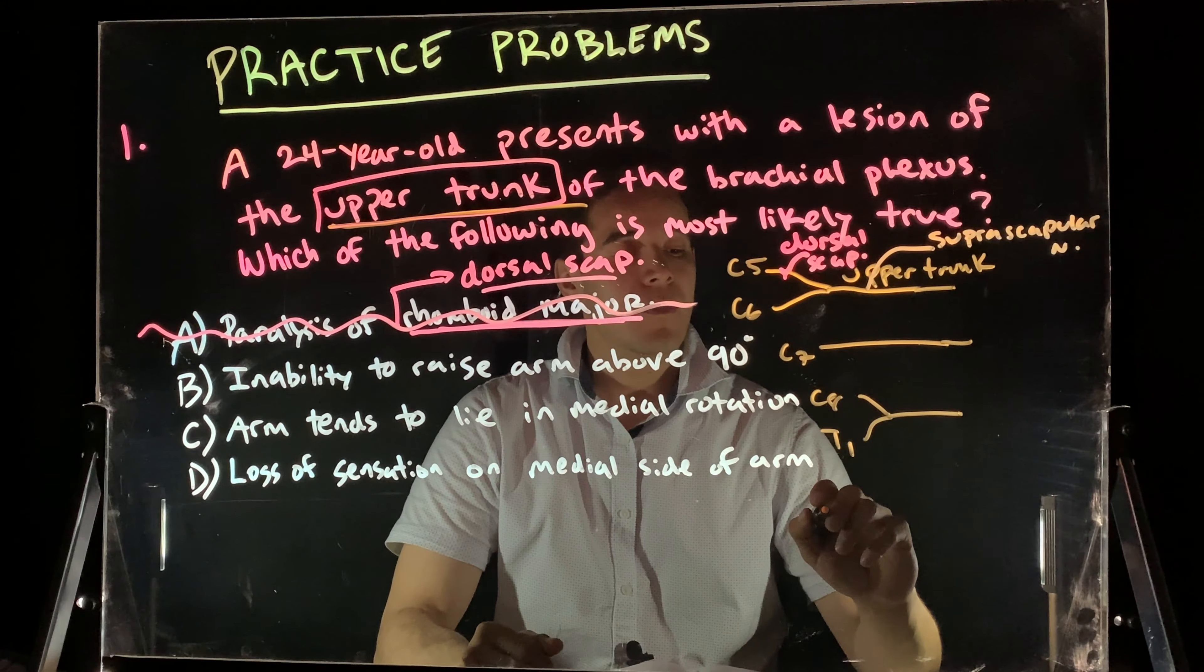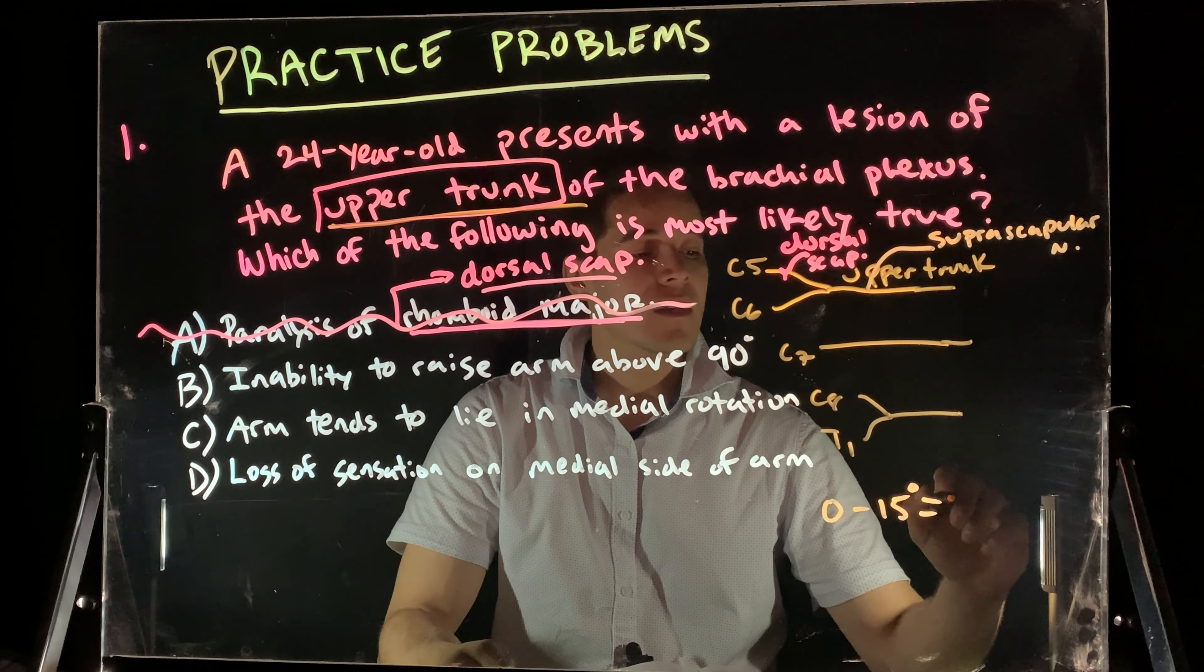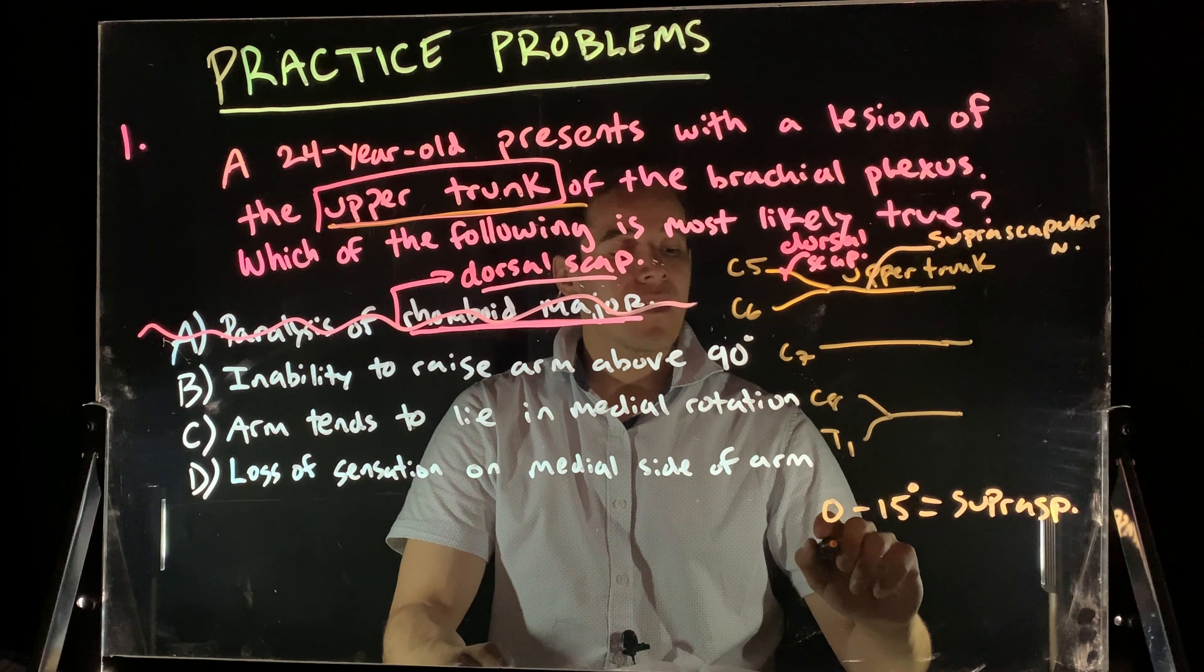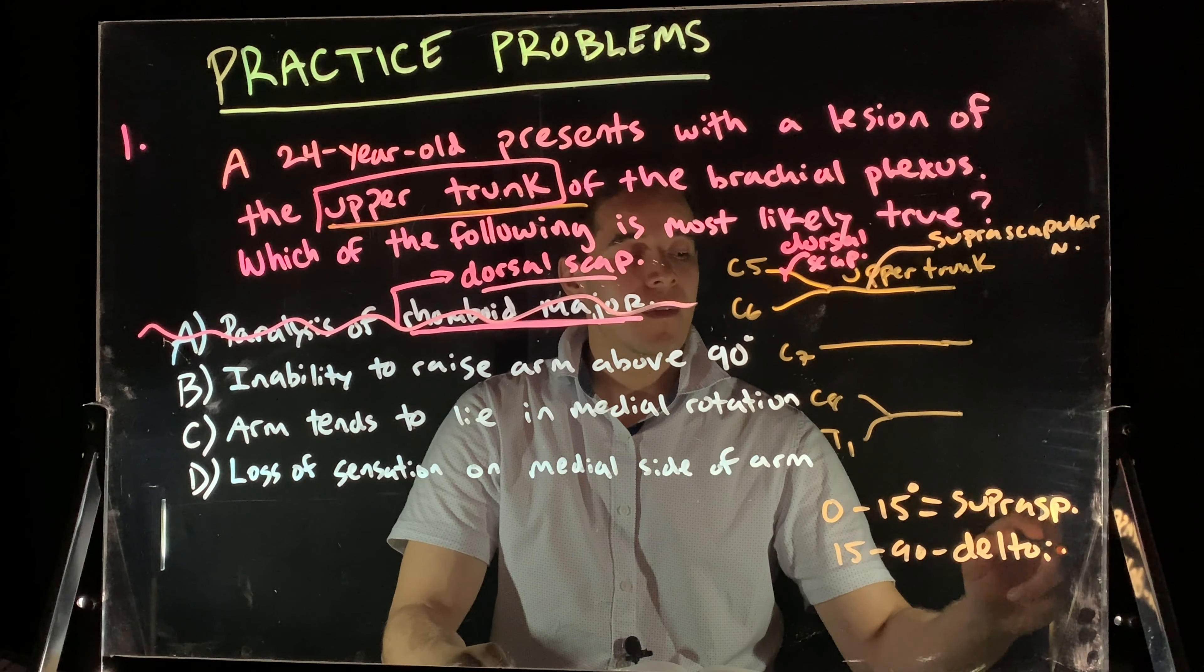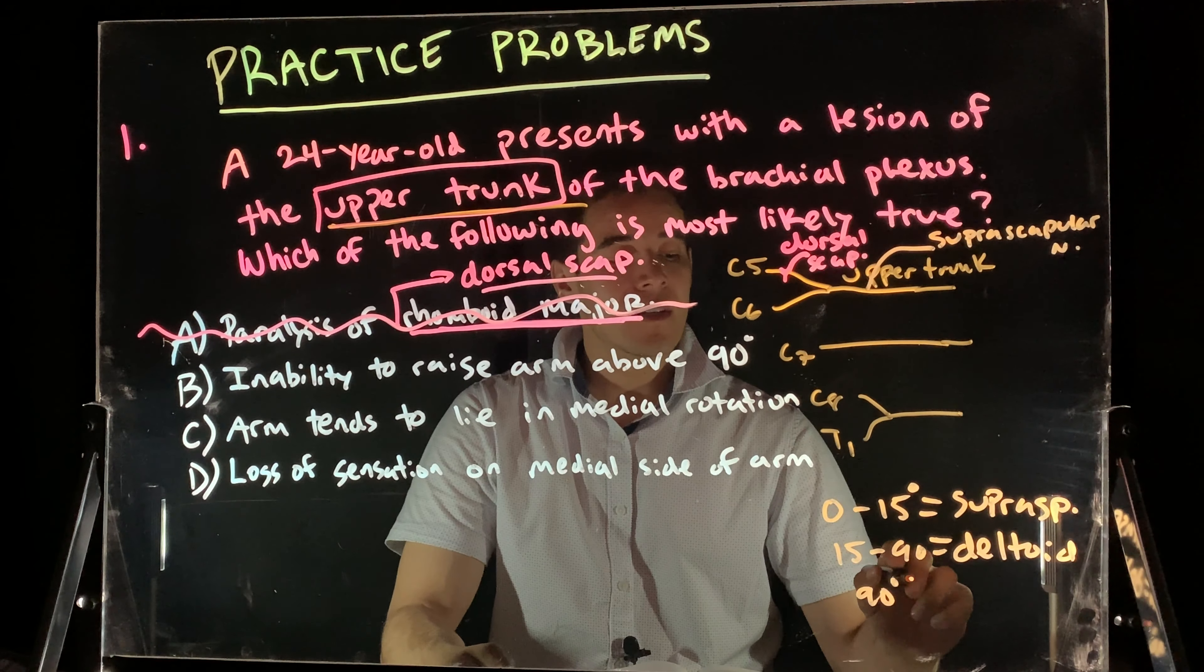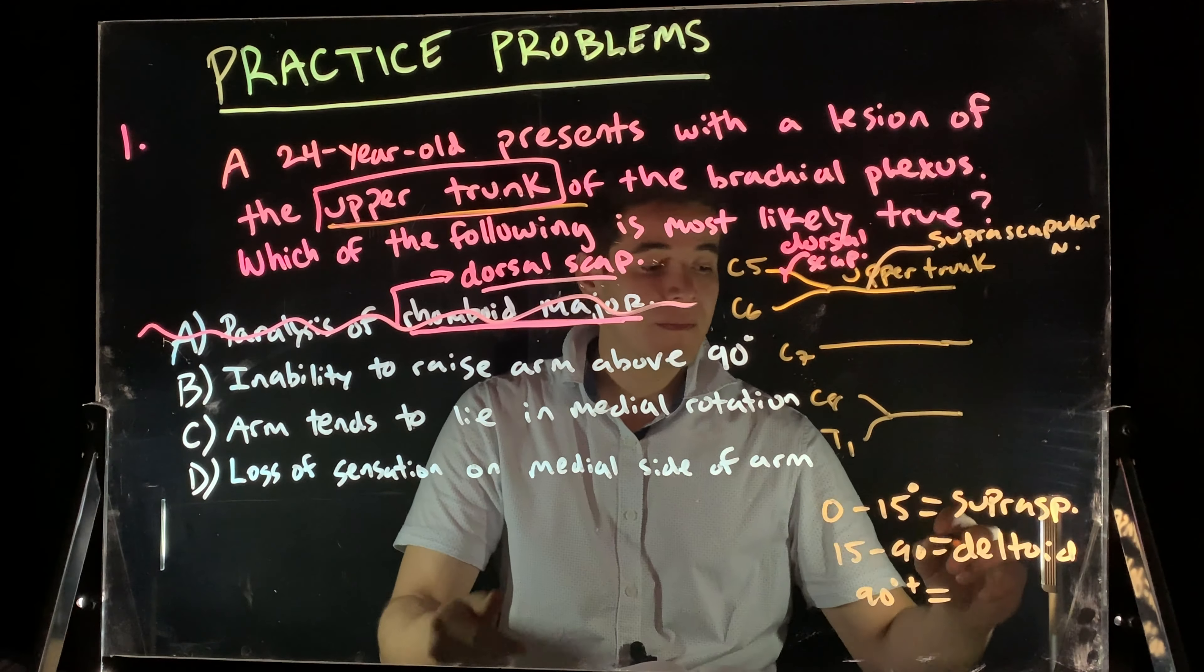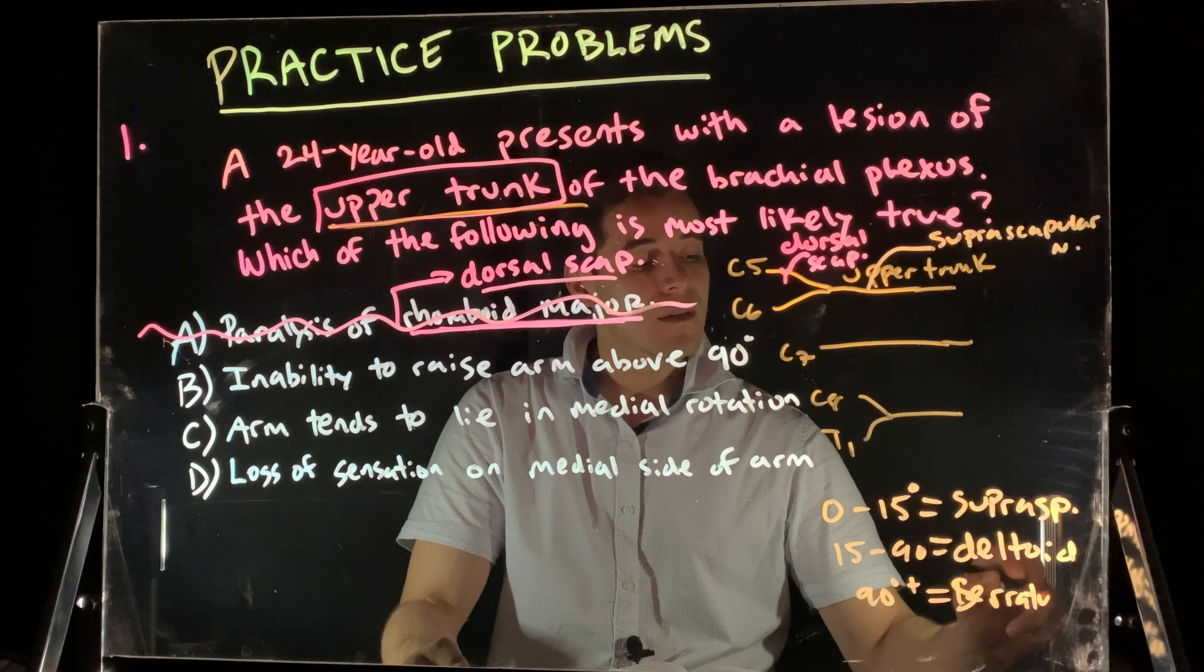Which muscle helps us raise our arm above 90 degrees? Yeah, so let's start from 0 to 15. We have the supraspinatus. 15 to 90 is our deltoid. And then 90 degrees and upward gives us that lateral rotation of the scapula. That's going to be our serratus anterior.